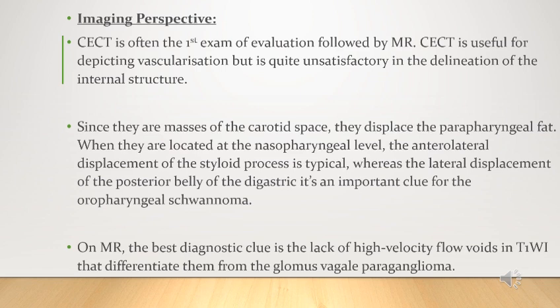Whereas lateral displacement of the posterior belly of digastric is an important clue for oropharyngeal schwannoma. On MRI, the best diagnostic clue is the lack of high-velocity flow voids on T1-weighted images, which differentiates them from glomus vagale paraganglioma.